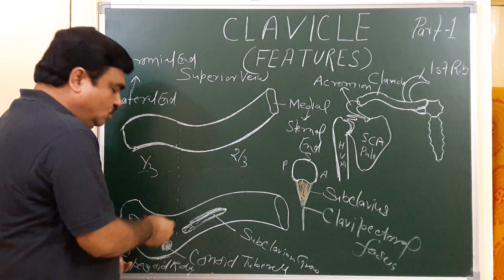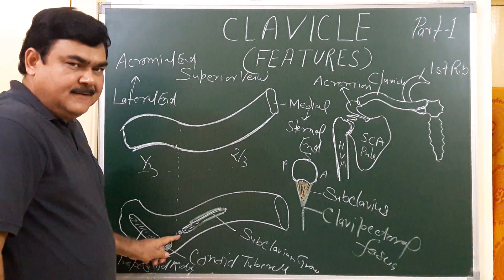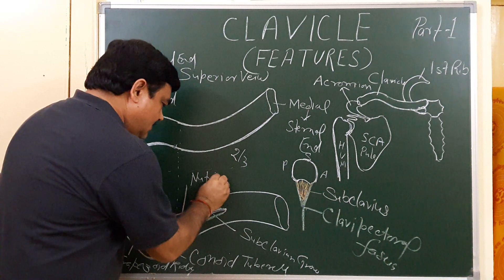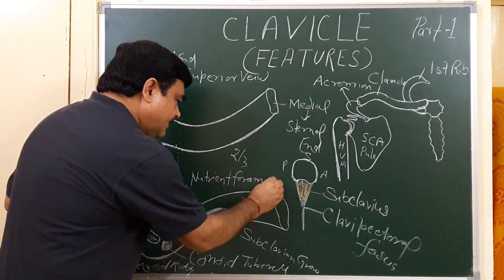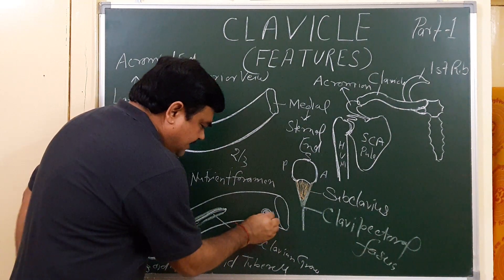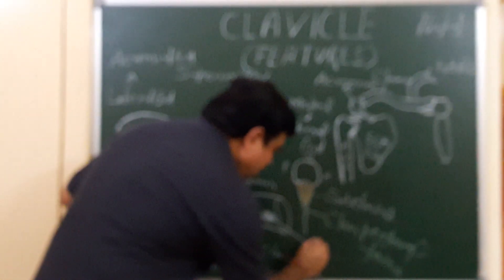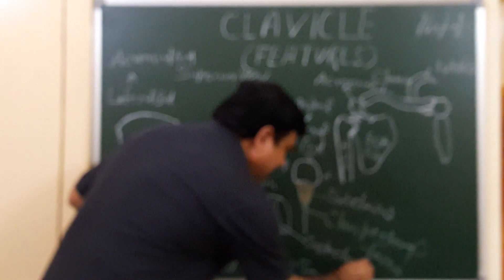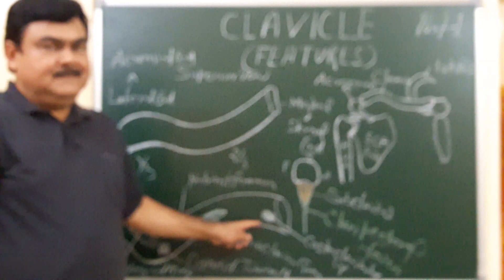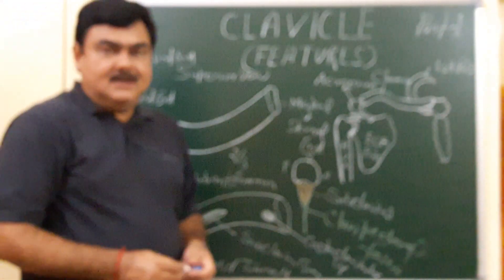Another important feature visible on the inferior aspect of the medial two-thirds part is the nutrient foramen. Also present here is the impression for the costoclavicular ligament. So these are the features of the clavicle. Thank you.